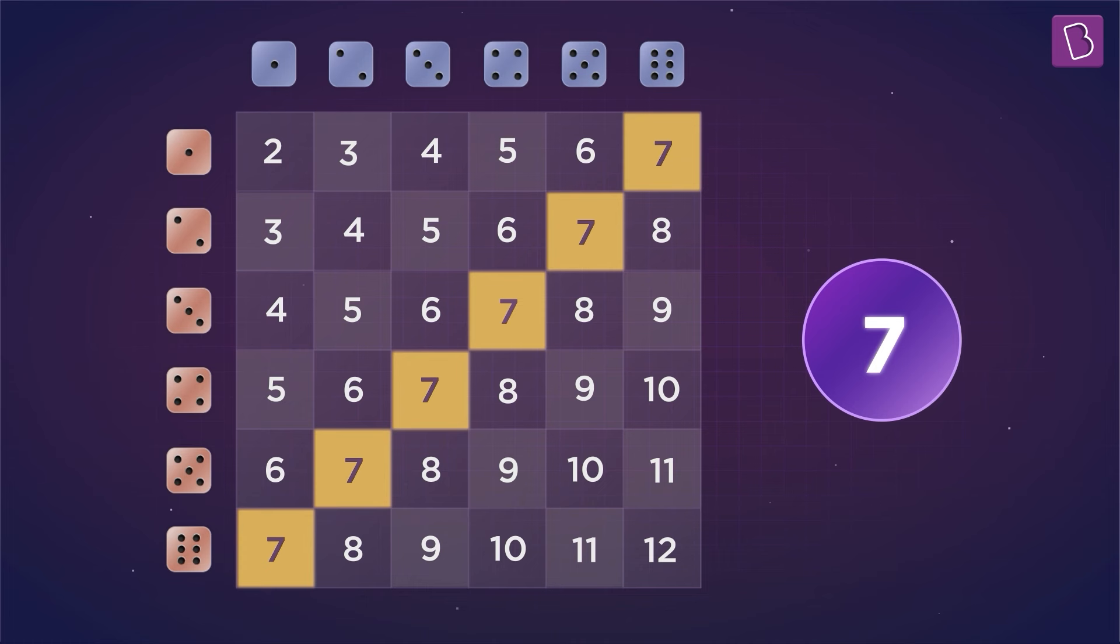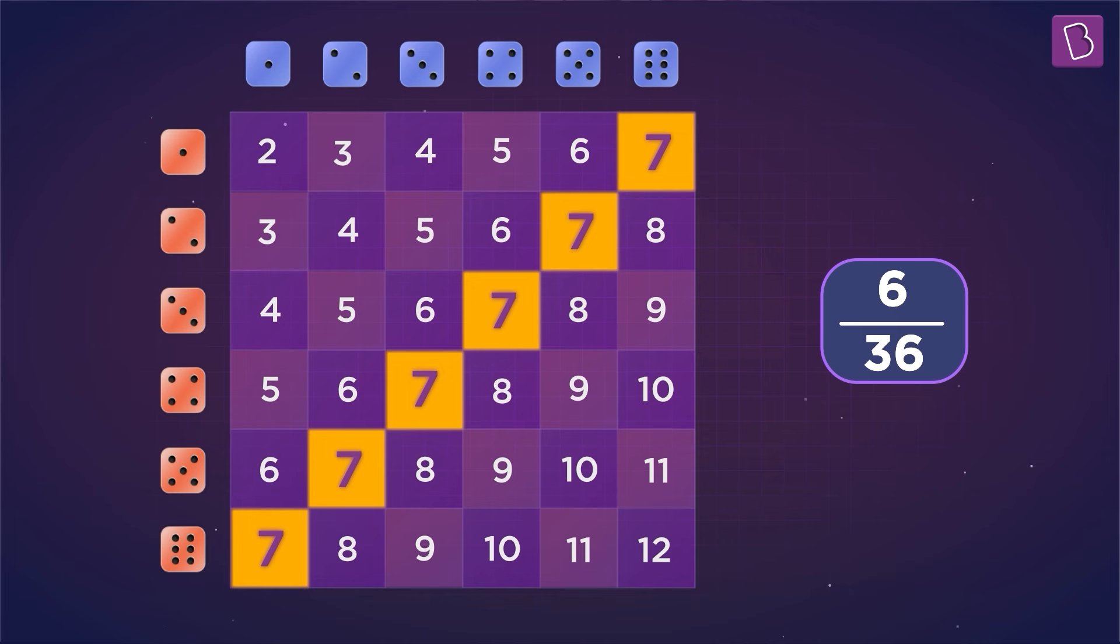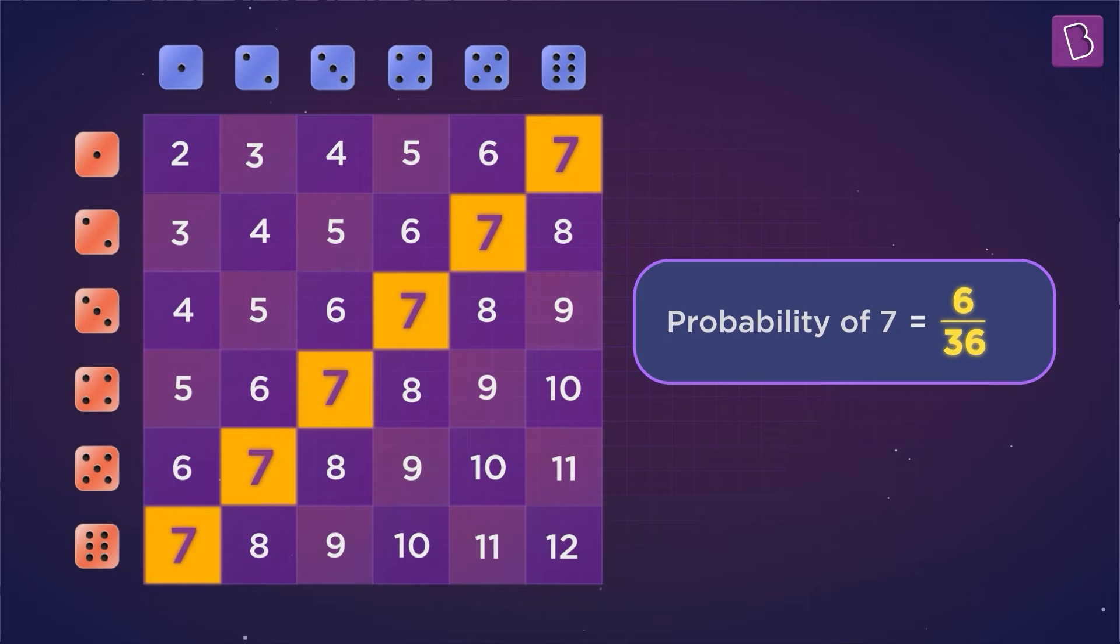We can easily calculate its likelihood or probability of an event. For example, here, seven appears six times out of a total of 36 possibilities, giving it a probability of six by 36 or one by six, the highest of all outcomes.